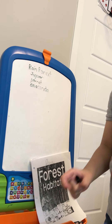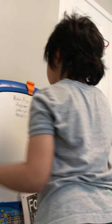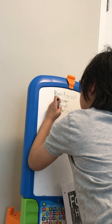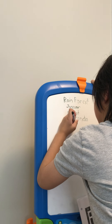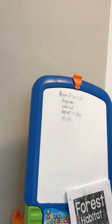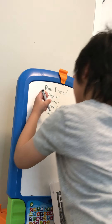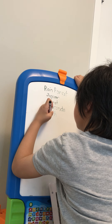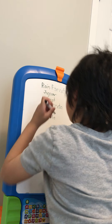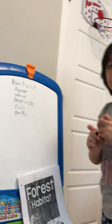Anaconda — it's a type of snake. A sloth. One more: Gorilla. What's a gorilla? It's a type of monkey.